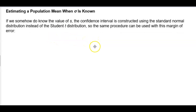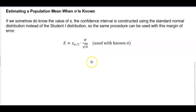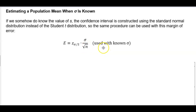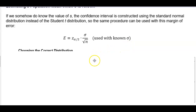The same procedure can be used with this margin of error. The margin of error is equal to the critical z value times the population standard deviation divided by the square root of the sample size. This is used with a known population standard deviation.